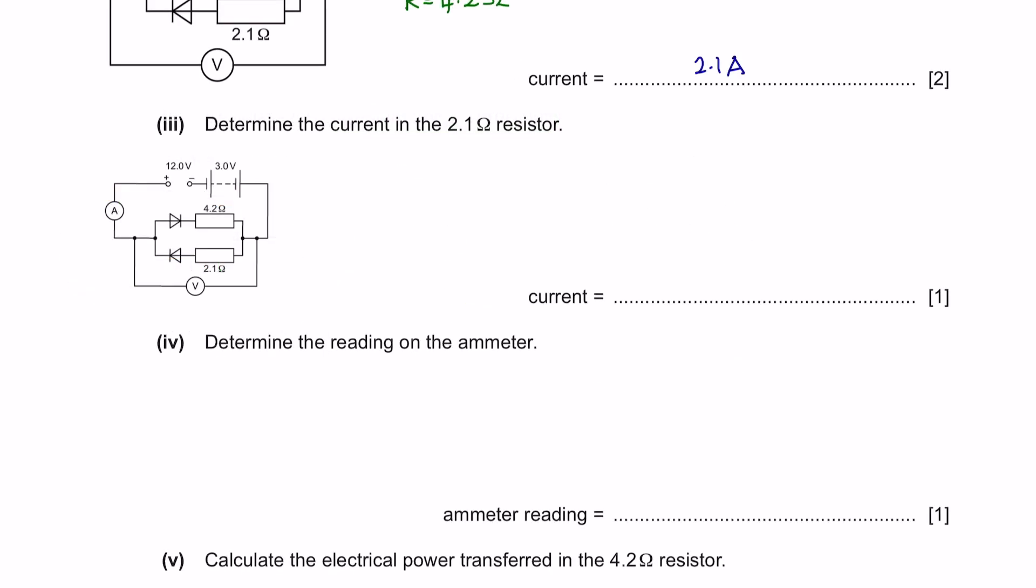Part 3, determine the current in the 2.1 resistor. This is the 2.1 resistor. Since the resulted potential difference was anti-clockwise, the current will only flow through the 4.2 resistor because diode only allows the flow of current to go in one direction. The current will not be able to go here because the diode is reverse biased. Since there is no current flowing in this 2.1 ohm resistor, the current would be zero.